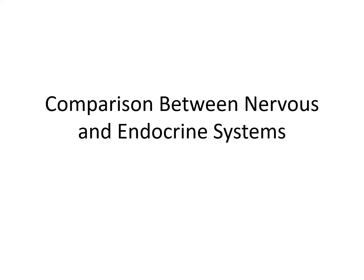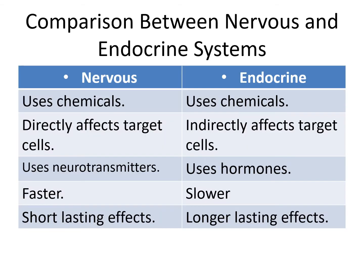Let's compare the differences and similarities between the nervous and endocrine systems. We're fairly confident in our knowledge of the nervous system, but how does this compare to the endocrine system? In this table, the nervous system is on the left column and the endocrine system is on the right. Both systems use chemicals — neurotransmitters versus hormones — but there's a major difference in how they affect their target systems.